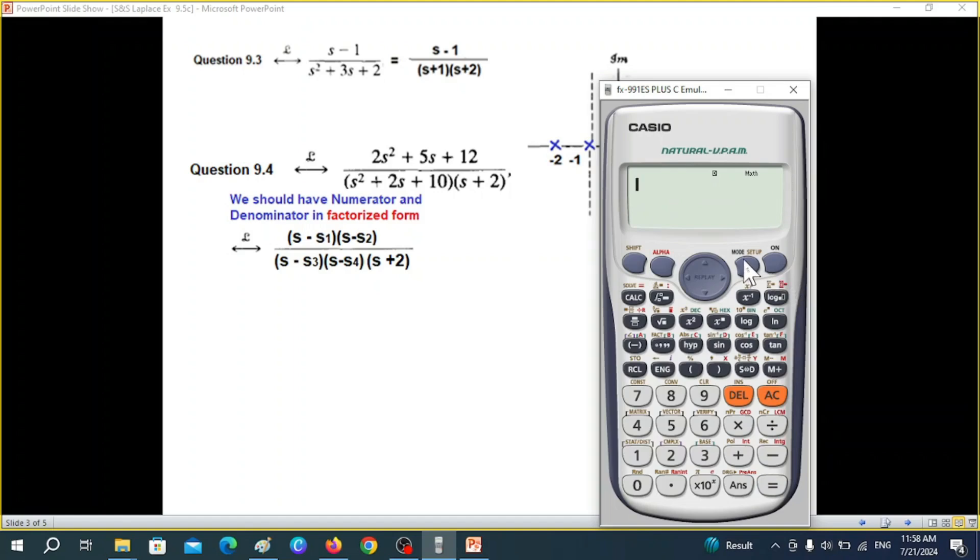We go to the mode and we'll select mode 5 for equation. This is equation mode 5. And since our equations are quadratic equations so we'll take 3. And now it is asking for the values of the quadratic equations or the coefficients.